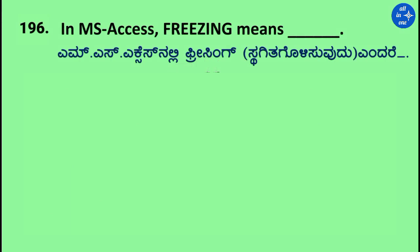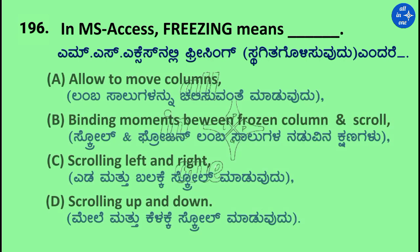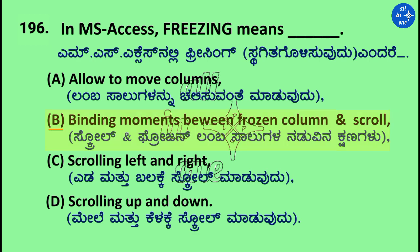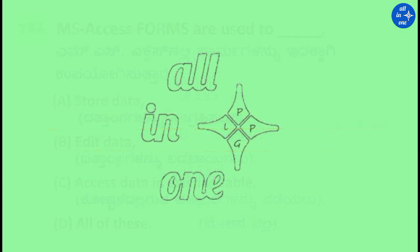Question: In MS Access, freezing means dash. Options: Allow to move columns; Binding movement between frozen column and scroll; Scrolling left and right; Scrolling up and down. Right answer is Binding movement between frozen column and scroll.